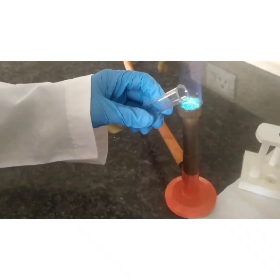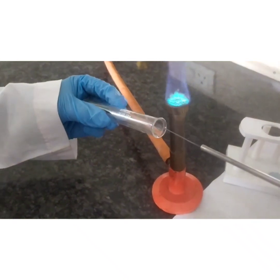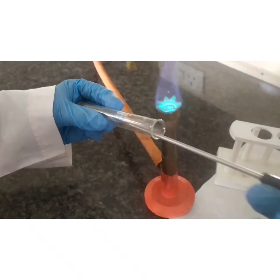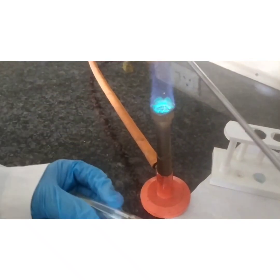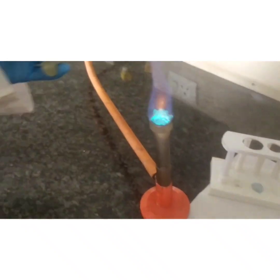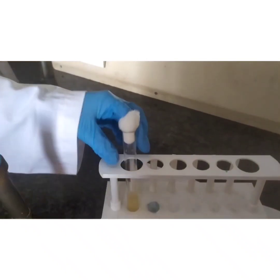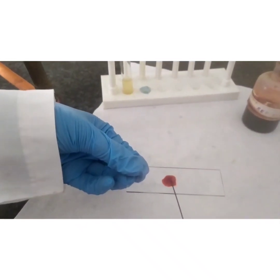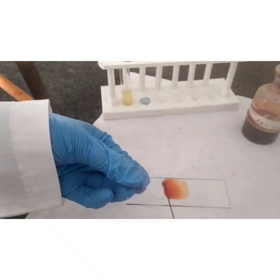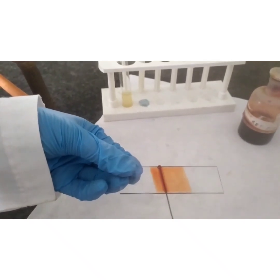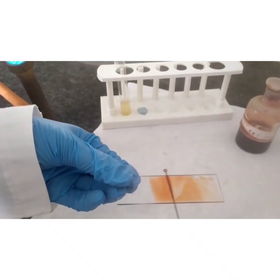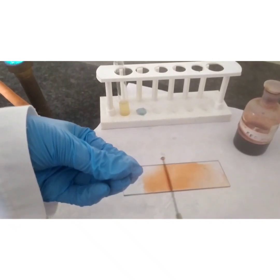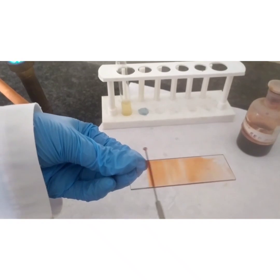Dip the inoculation loop into the bacterial suspension and take the organism. Place it on the Congo red stain which you have taken and mix the sample well. Gently mix the sample by holding your loop in the horizontal direction and evenly distribute this mixture throughout the slide.